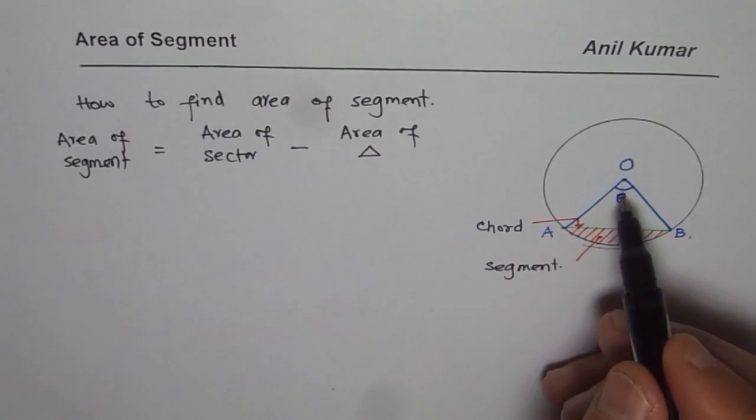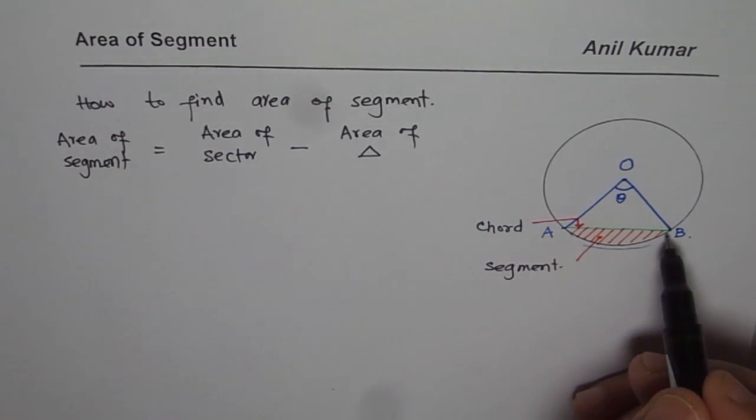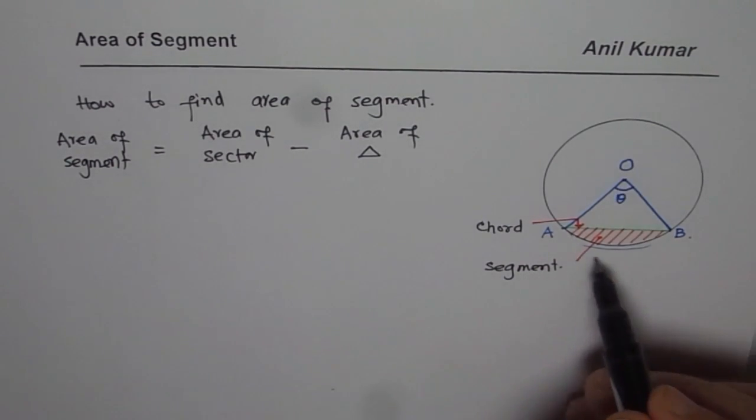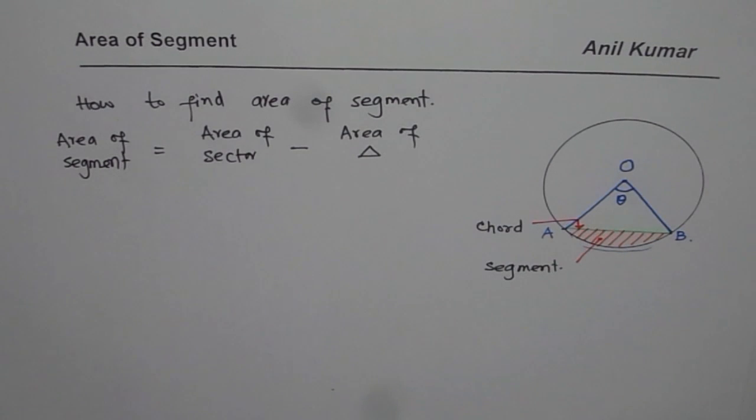So if I take away the area of triangle from the area of the sector, I get area of the segment. And that is how you actually find area of the segment.